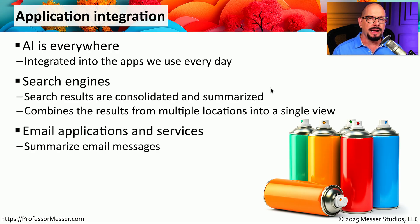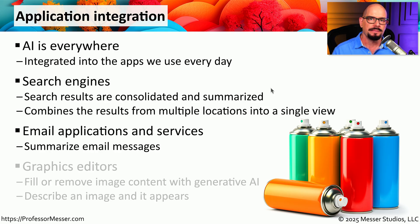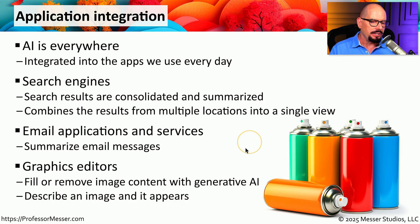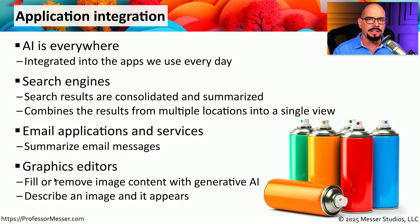We've also seen AI in our email clients and on our mobile devices. Instead of having to read through a long email, you can read an AI summary that explains the information contained in that message. And in graphics editors, you can use generative AI to fill in or remove information from an image by simply highlighting it on the screen and asking the AI to remove it. We've also seen artificial intelligence engines that allow you to input a description of what you'd like an image to be, and the AI will create that image on the screen.